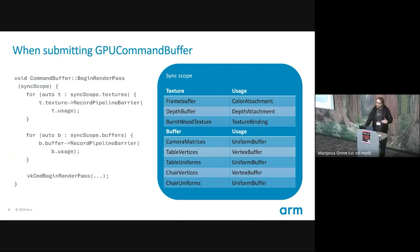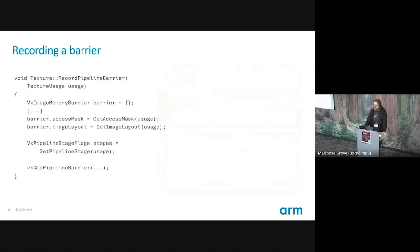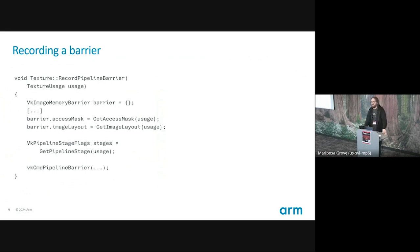When the user submits the WebGPU command buffer to the queue, that's where we're going to go ahead and actually record the Vulkan command buffer. We loop through every command in the WebGPU command buffer and record the corresponding Vulkan command — usually there's a pretty simple one-to-one mapping. But in the case of begin render pass, before we record that command, we're going to loop through every single resource in our sync scope — every texture, every buffer — and insert the pipeline barrier we need. Each resource is going to have a function for recording a pipeline barrier. It takes in a texture usage — or in the case of a buffer, a buffer usage — which tells us how this resource is going to be used in the upcoming render pass. And we convert that to everything we need for a pipeline barrier: an access mask, an image layout, a pipeline stage.